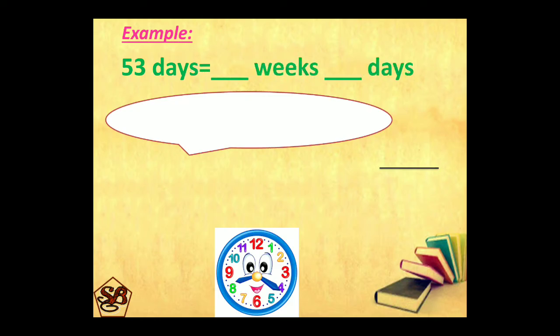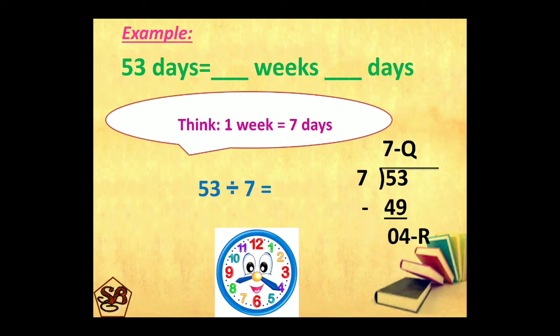53 days into weeks and days. Again, dividing 53 by 7. When we divide 53 by 7, 7 sevens are 49. 53 minus 49 will give us 4. Now,